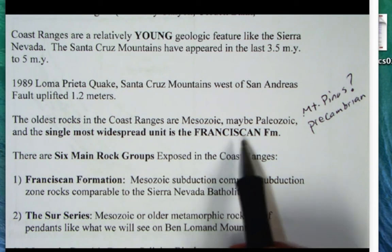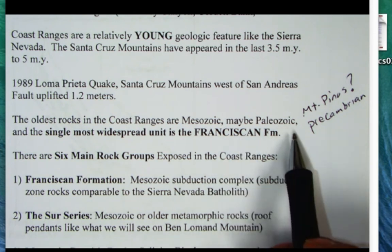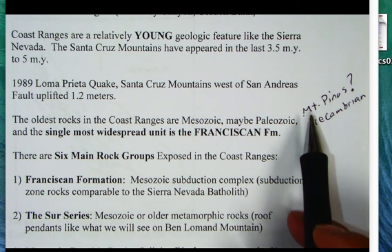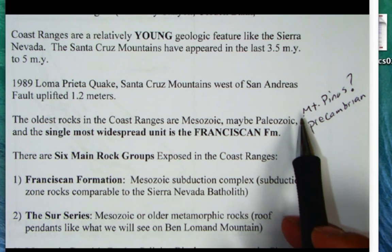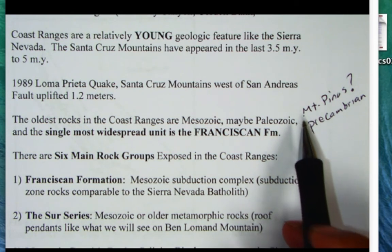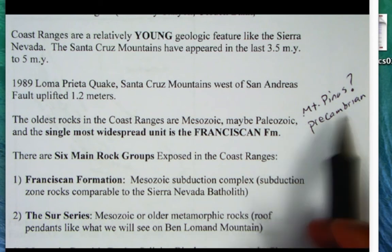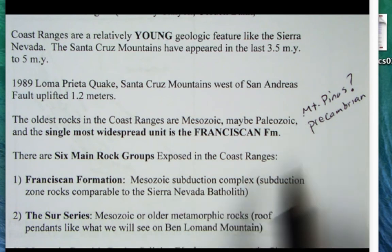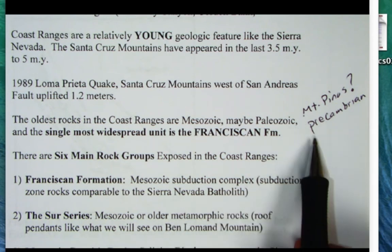The textbook mentions some possible Precambrian rocks up in the Mount Pinos area down in the southern Coast Ranges, in fact bordering along with the Transverse Ranges where there are some Precambrian rocks exposed. We'll look at those in more detail when we cover the Transverse Ranges.